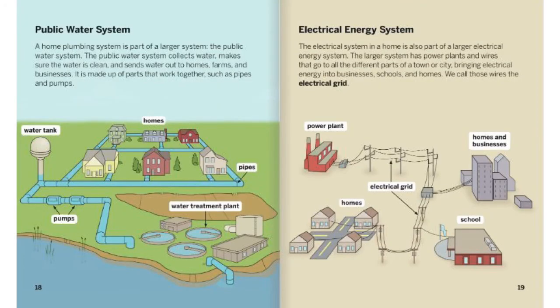Public water system. A home plumbing system is part of a larger system: the public water system. The public water system collects water, makes sure the water is clean, and sends water out to homes, farms, and businesses. It is made up of parts that work together, such as pipes and pumps. Homes, water tank, pumps, water treatment plant, and pipes.